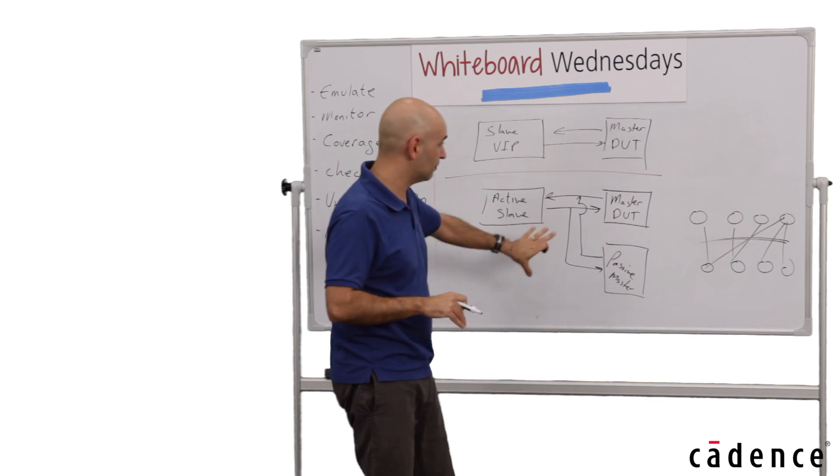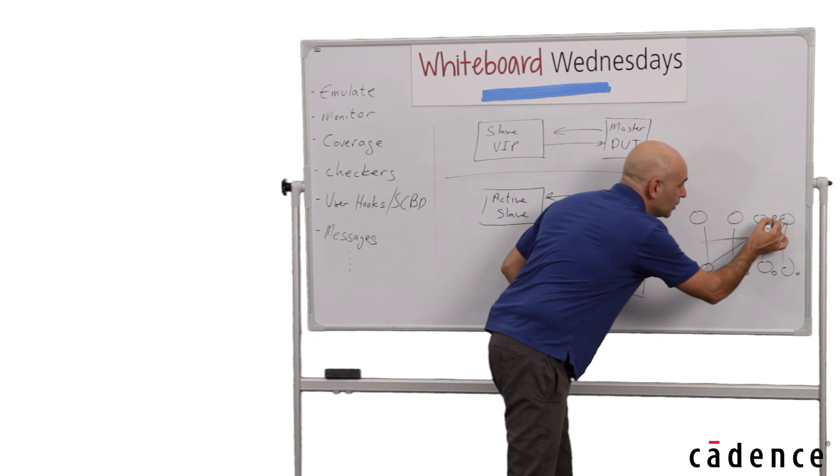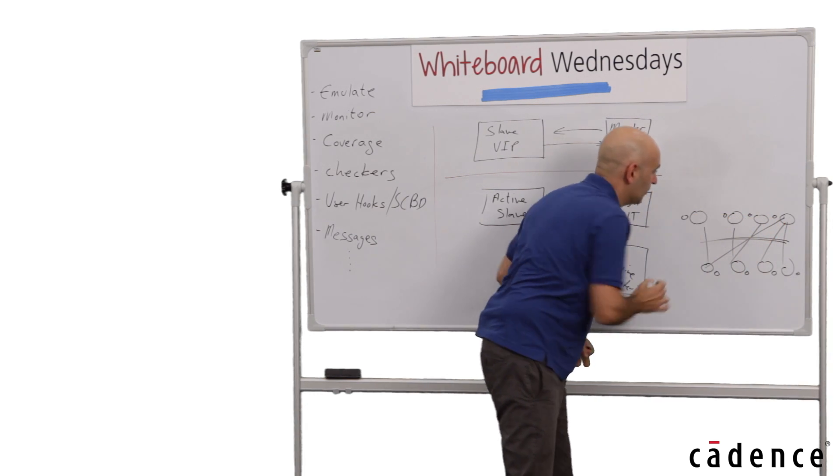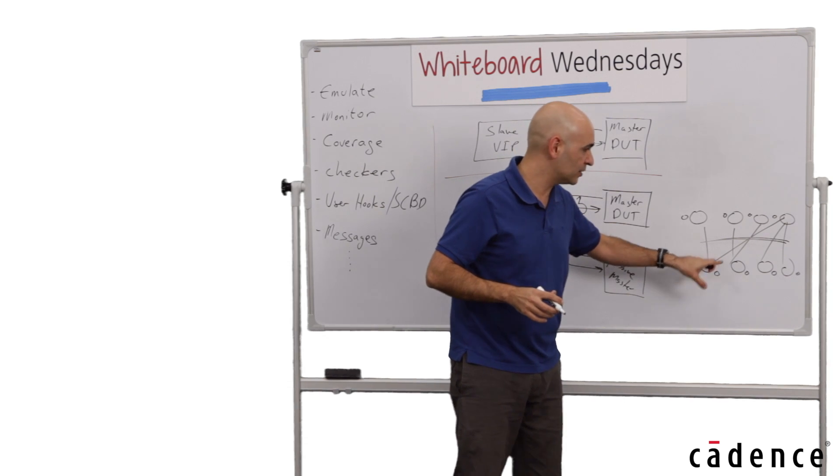If you use the modular approach, you basically break the complex problem to smaller problems by instantiating a VIP instance, VIP agent for each port.